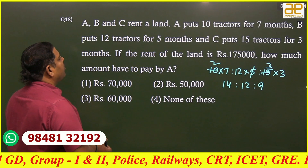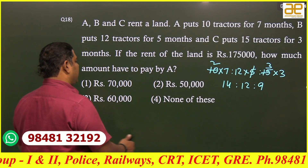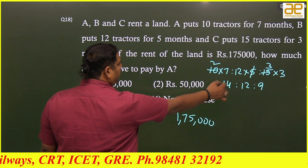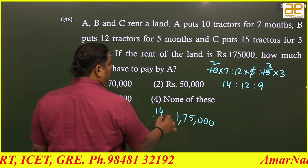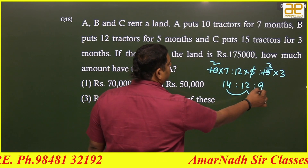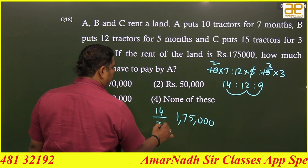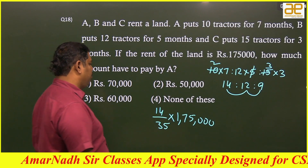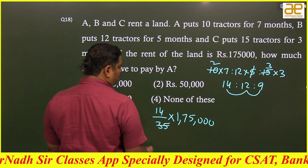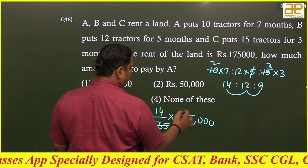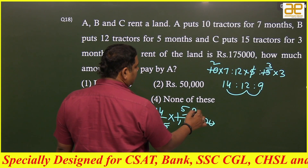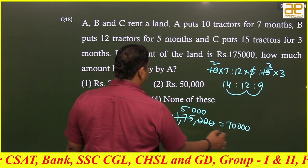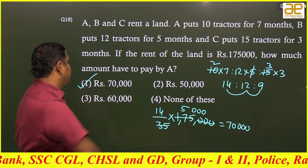They should distribute the rent in the ratio of 14 : 12 : 9. The total rent is 1,75,000. A's share means 14 parts out of a total of 14 + 12 + 9 = 35. So A's share = (14/35) × 1,75,000. 35 fives are 175, cancel with 5; 14 fives are 70, giving 70,000. A's share is ₹70,000 — that is the first option.